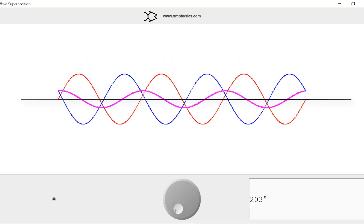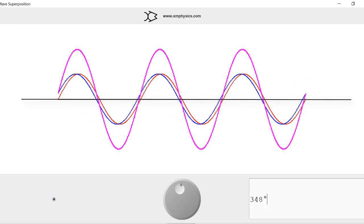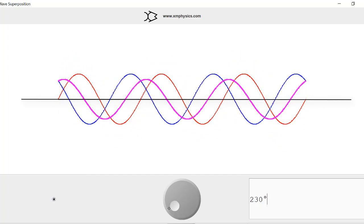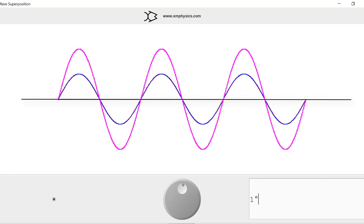And again when they are off by 3 complete cycles or 6π radians, and again when they are off by 4 complete cycles or 8π radians.